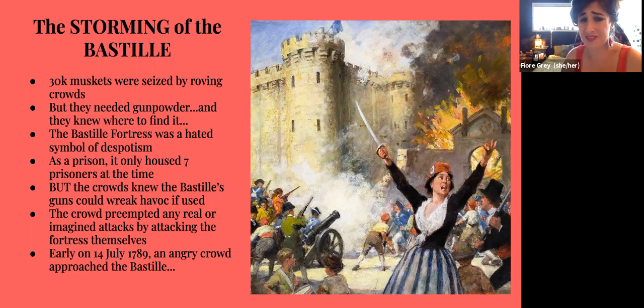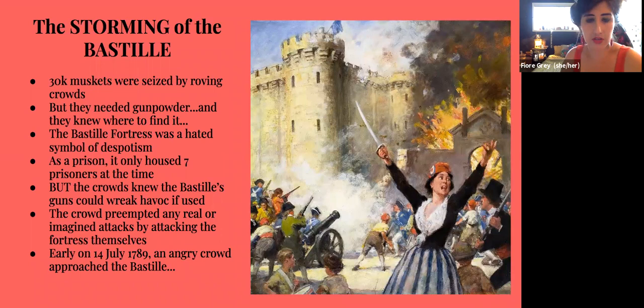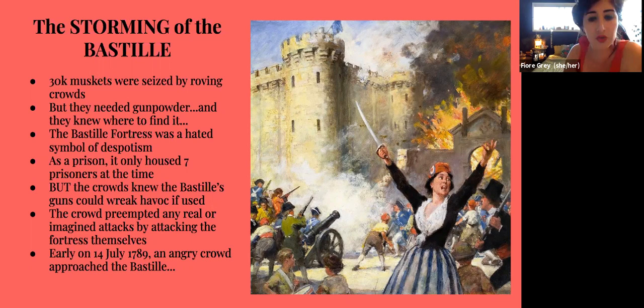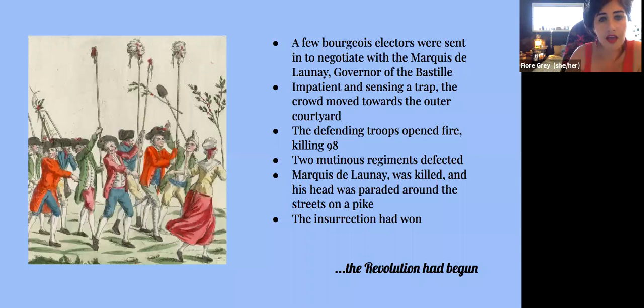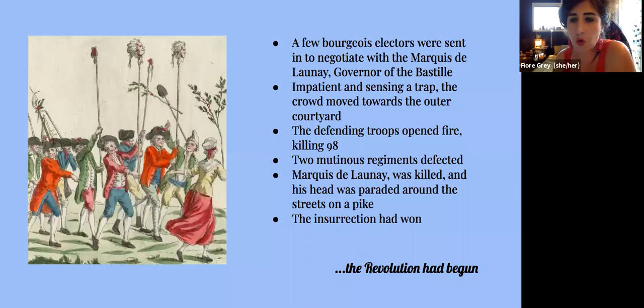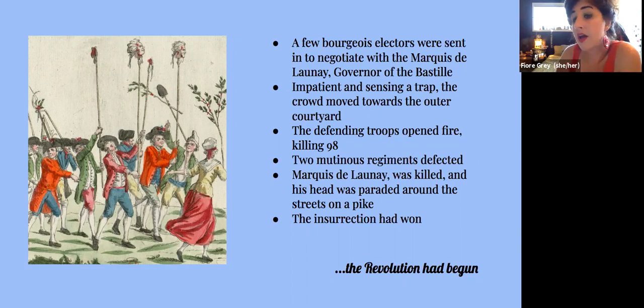Around 30,000 muskets were seized by roving crowds, but muskets aren't much use without gunpowder — and they knew where to find it. The Bastille fortress was a hated symbol of despotism; as a prison it only housed seven prisoners, including the Marquis de Sade. Early on the 14th of July, the angry crowd approached the Bastille. A few bourgeois were sent to negotiate with the governor, the Marquis de Launay, but the crowds got impatient, sensed a trap, and moved to the courtyard. The defending troops opened fire — 98 were killed — but two mutinous regiments defected, turning the tide. The Marquis de Launay was killed, his head paraded on a pike, and the insurrection had won. The revolution had begun.